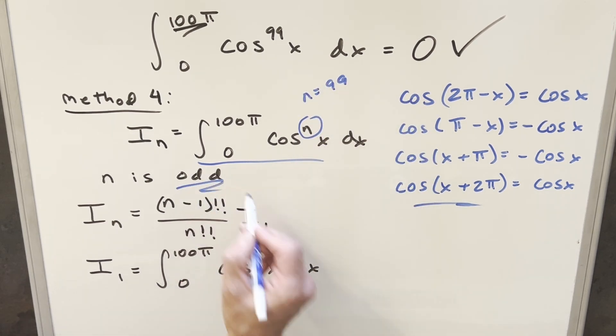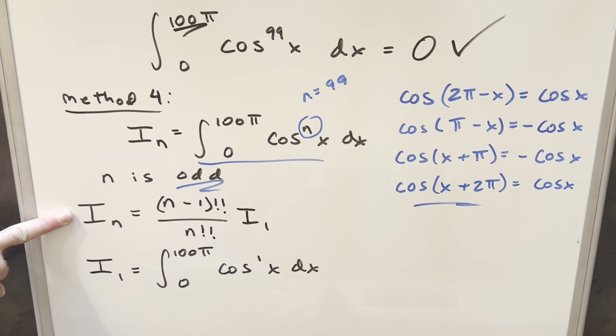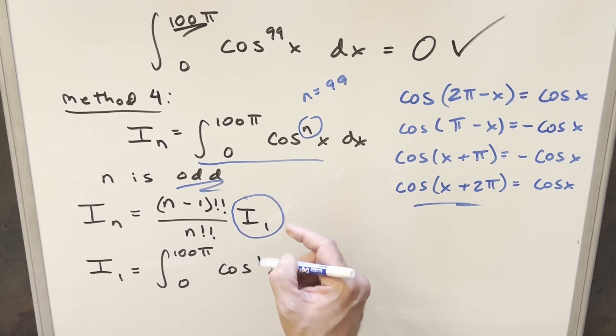And we notice that n is odd, of course. So we use this formula right here in terms of double factorials and i sub 1, where n is 1.